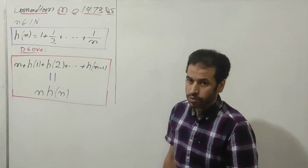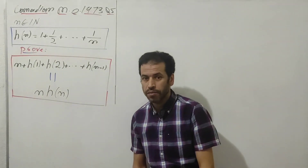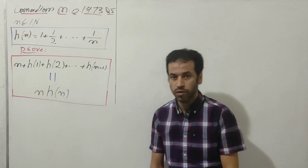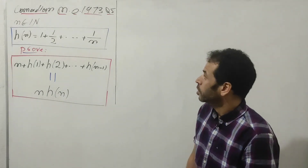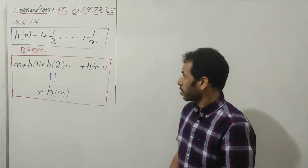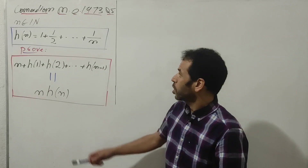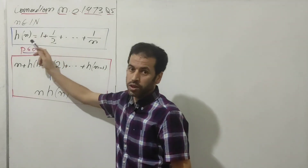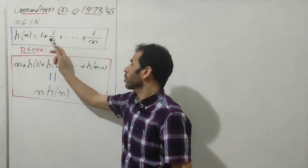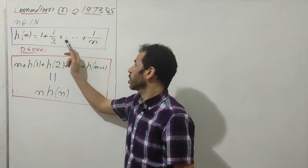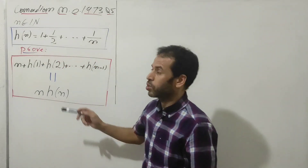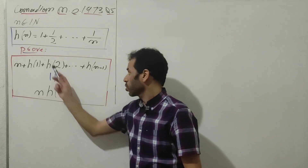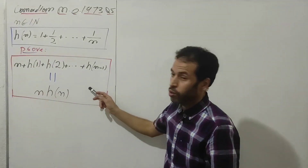In this video I would like to introduce a very nice problem from the Canarian Mathematical Olympiad, 1973 edition, question number five. We have, for all natural numbers, the sequence H(n) equals 1 plus 1/2 plus 1/3 all the way down to 1/n.